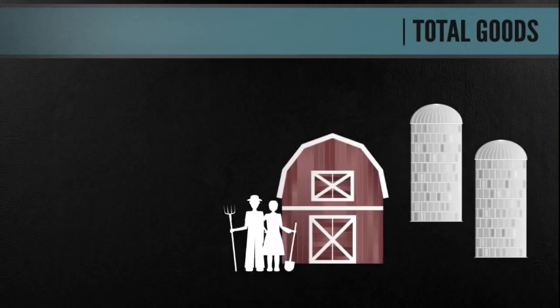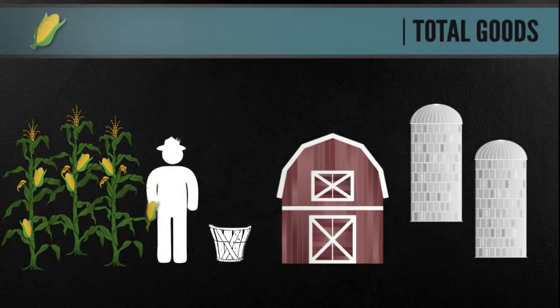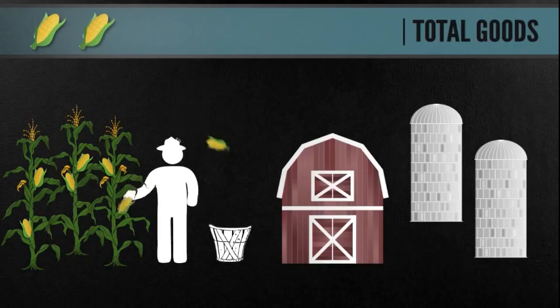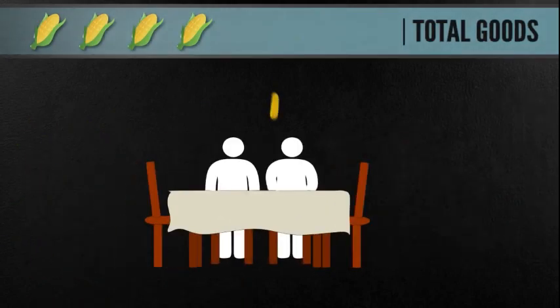Let's look at a family farm. How much food they produce depends on how much they work. When they work, their total amount of food increases. When they eat, their total amount of food shrinks.